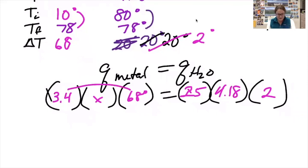So now I'm going to multiply those together. 3.4 times 68, 231.2x is going to equal 25 times 4.18 times 2, which is 209. And I'm going to divide both sides by 231.2.